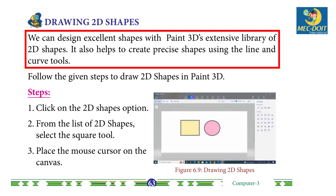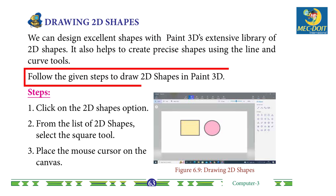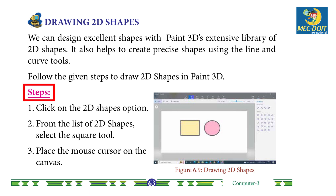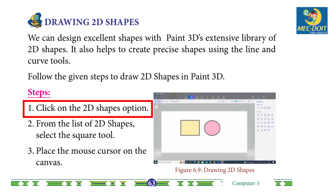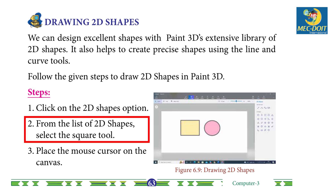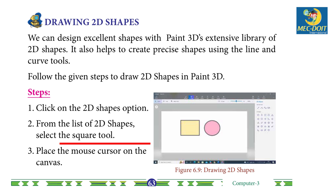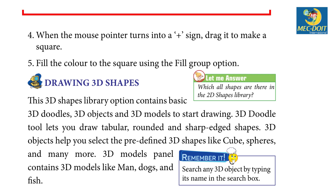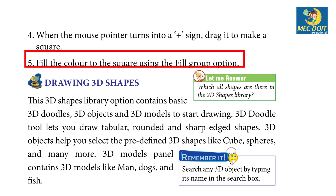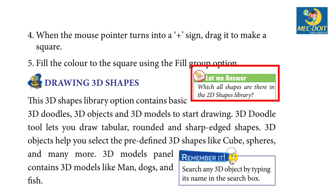It also helps to create precise shapes using the line and curve tools. Follow the given steps to draw 2D shapes in Paint 3D: Step 1 — Click on the 2D Shapes option. Step 2 — From the list of 2D shapes, select the Square tool. Step 3 — Place the mouse cursor on the canvas. Step 4 — When the mouse pointer turns into a plus sign, drag it to make a square. Step 5 — Fill the color to the square using the Fill Group option. Let me answer: Which shapes are there in the 2D shapes library?